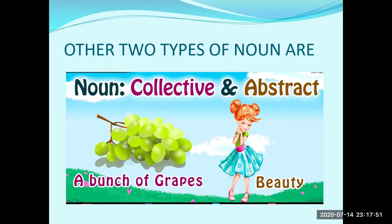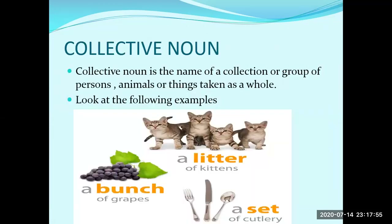First we should know about collective noun. A collective noun is the name of a collection or group of persons, animals, or things taken as a whole. For example: a litter of kitties, a bunch of grapes, and a set of cutlery are names given to a group of the same kind.